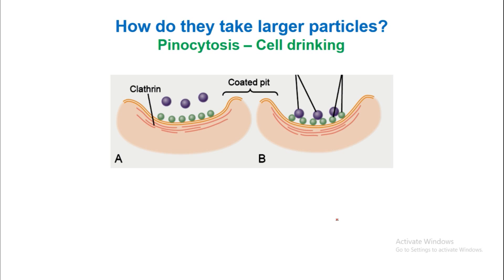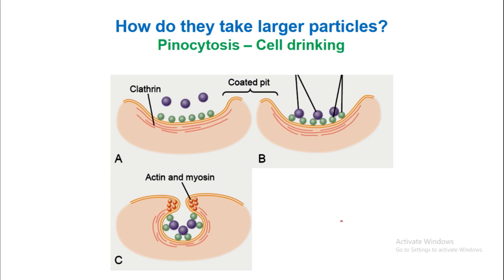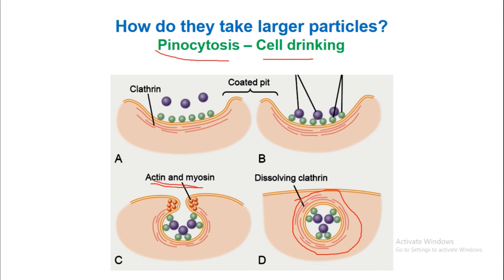Taking in larger particles is known as pinocytosis, or cell drinking. It is a clathrin-mediated process, and also involves the help of actin and myosin filaments. This is how the clathrin-mediated pinocytosis process takes place in the cell.